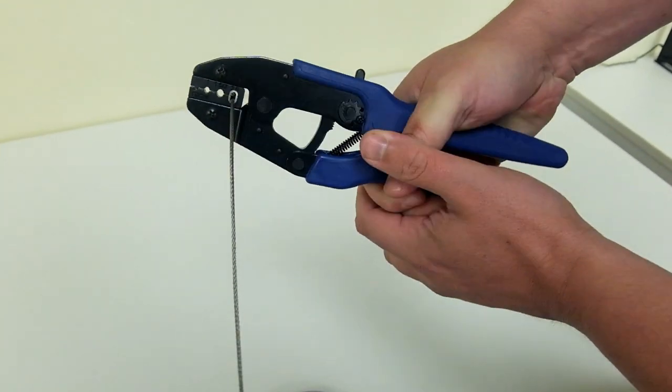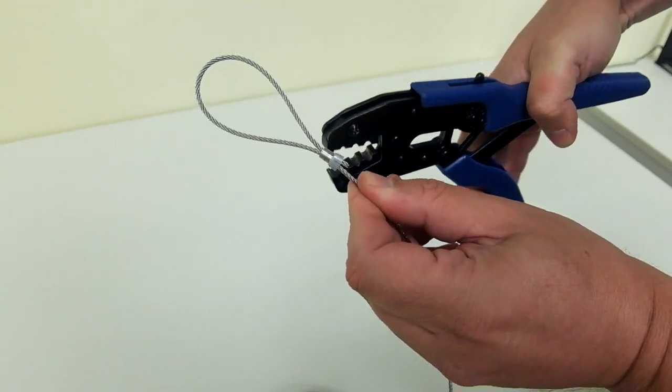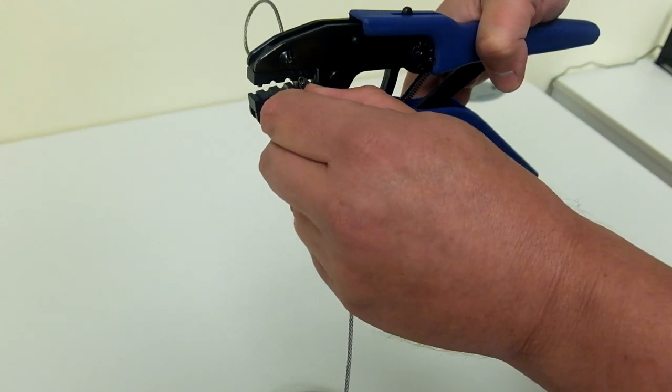This ferrule requires pressing in two processes. Always press the section nearest to the eye first and then the section nearest to the dead end second.